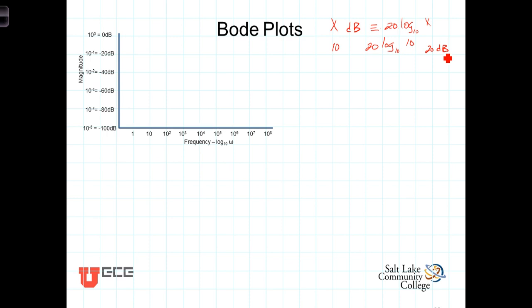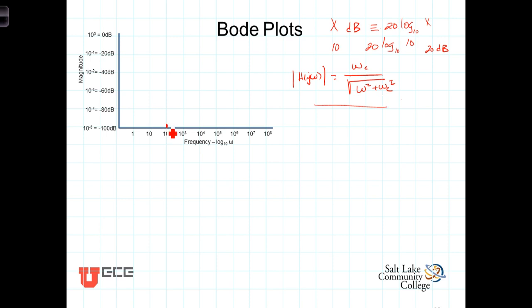Let's go ahead and construct the Bode plot, which is nothing more than a log-log plot of the frequency response of our low-pass filter. The magnitude of the frequency response is |H(jω)| = ω_c / √(ω² + ω_c²), where for our RL filter, ω_c = R/L. We've seen that the cutoff frequency in the filter we've been working with was 100 radians per second, and the magnitude of the frequency response at the cutoff frequency was 3 dB less than the maximum value H_max.